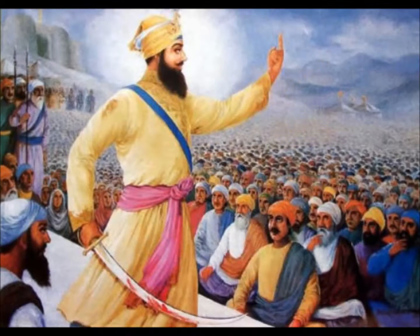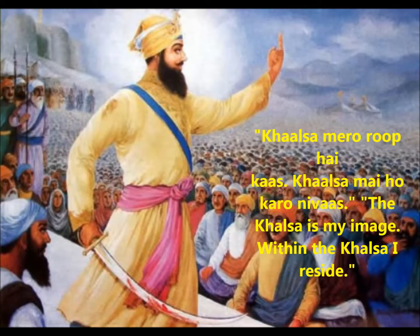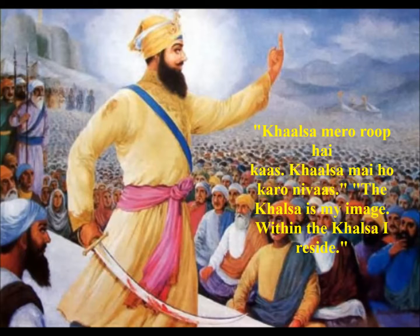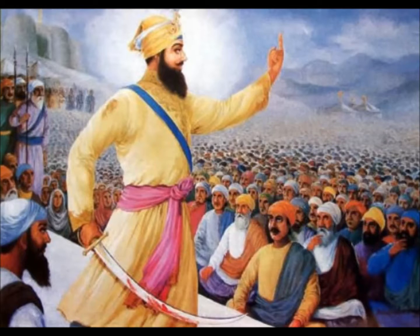A Dastar is a turban worn to protect the Kesh and guard the Dastam Dwar, the tenth gate — a spiritual opening at the top of the head. The turban is a spiritual crown, a constant reminder to the Sikh that he or she is sitting on the throne of consciousness and is committed to living according to Sikh principles. Guru Gobind Singh told his Sikhs: 'Khalsa meh ro roop hai khas, khalsa meh ho karo nivaas' — meaning 'the Khalsa is my image; within the Khalsa I reside.' Wearing a turban declares sovereignty, dedication, self-respect, courage, and piety.